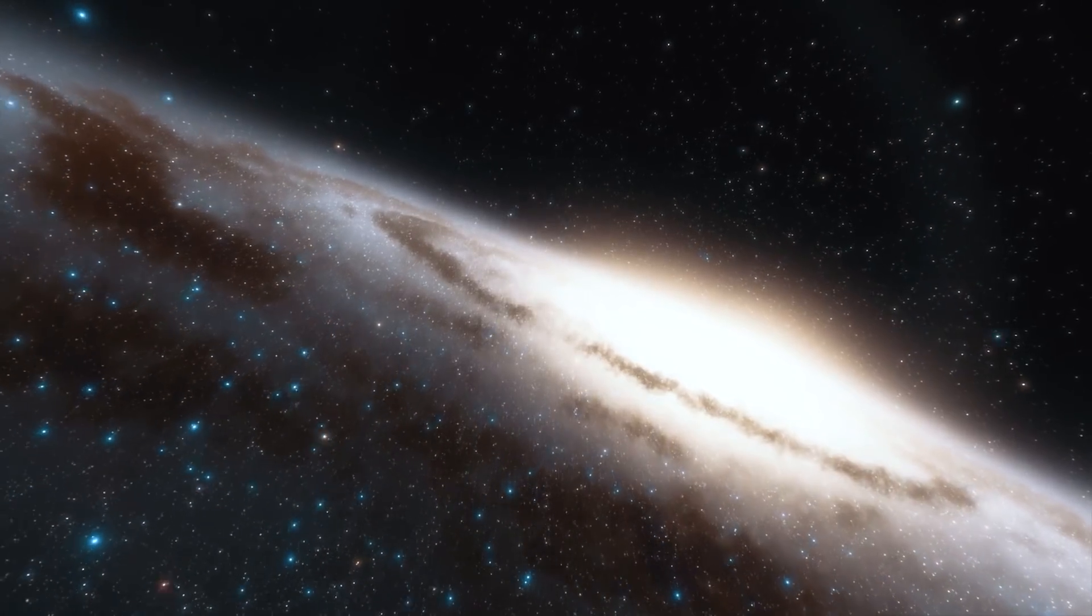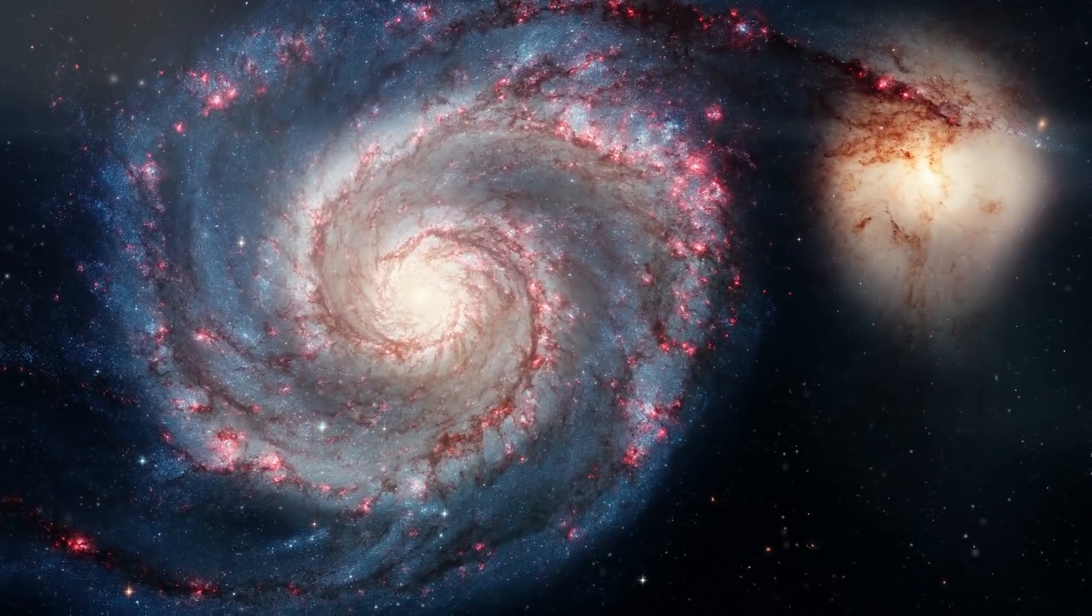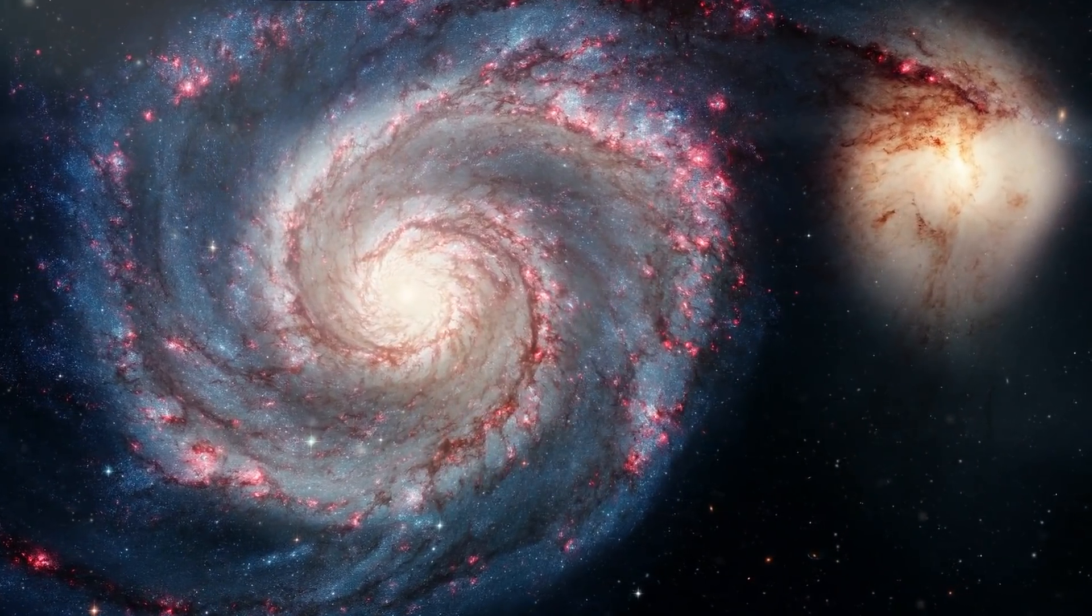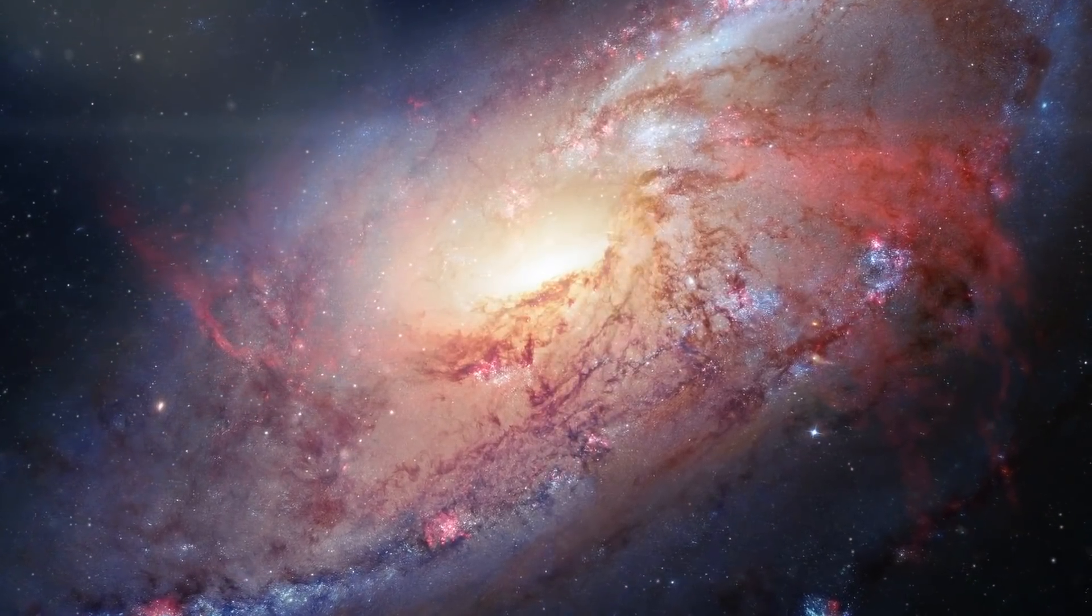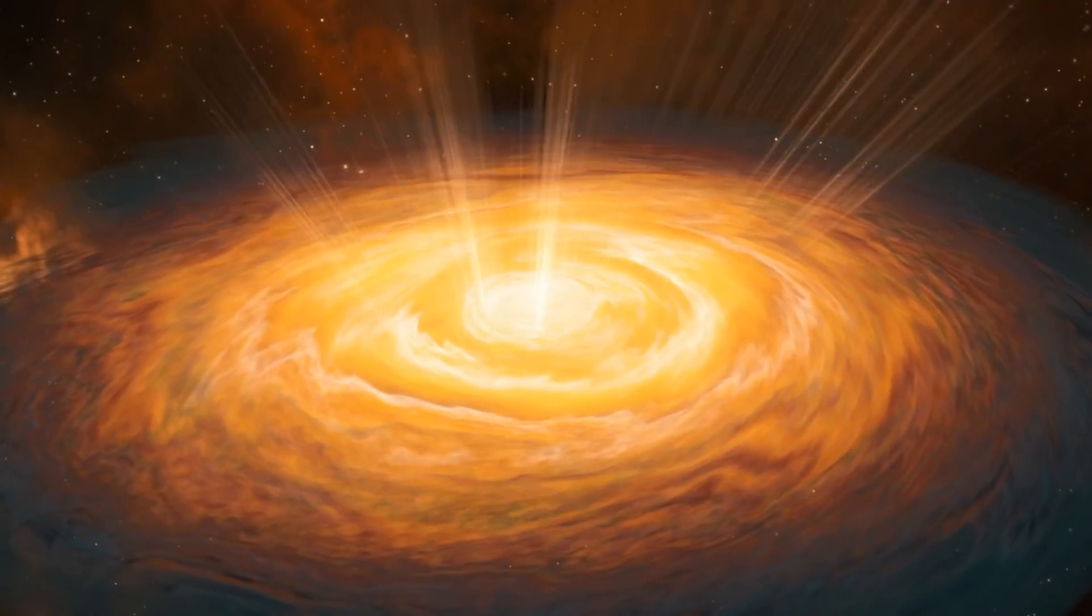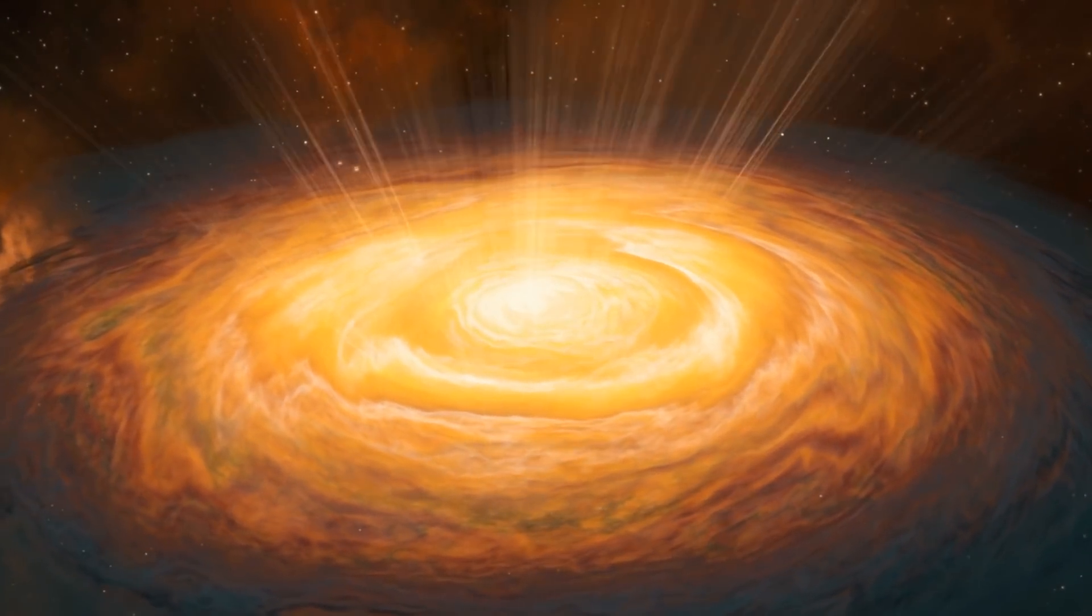But if we now take a look at the active core of a galaxy, we see a radiantly bright structure there. But how is this possible? In reality, what appears to us in the visible range of light as an almost point-like structure is not the actual black hole, but a so-called quasar.